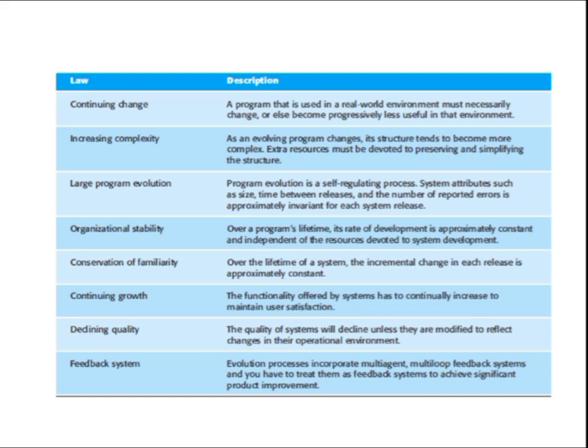The fifth law is Conservation of Familiarity: over the lifetime of a system, the incremental change in each release is approximately constant. Whatever changes you make in each release will be approximately constant. Suppose in the first release you do one change — in the second release you will also do approximately one or two changes only. The changes will be constant in each release, so there won't be much difference.